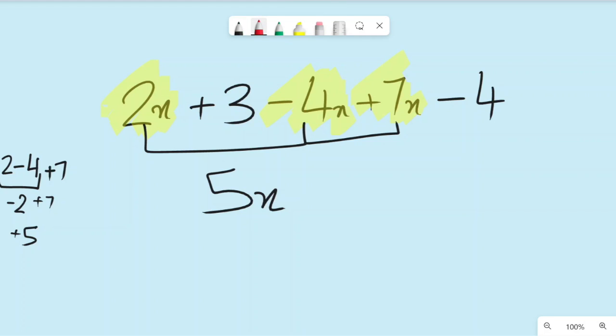Now we will bring the other like terms together, positive 3 and negative 4. So if you bring them here together, 3 minus 4, it will end up giving you negative 1. So it will be negative 1, and that's your answer. You can't just write 5x minus 1 equal 4x or anything else. That is your answer. This is it.